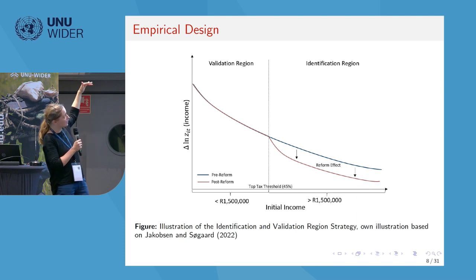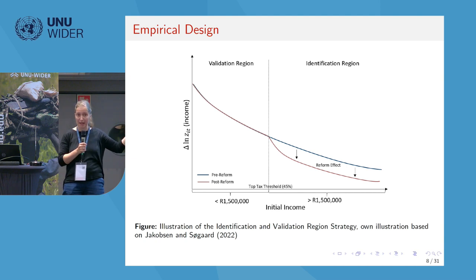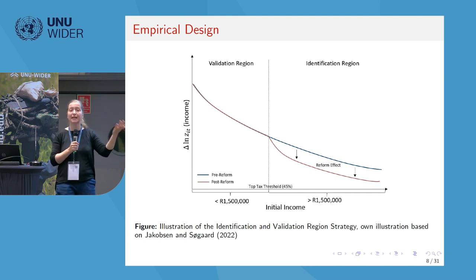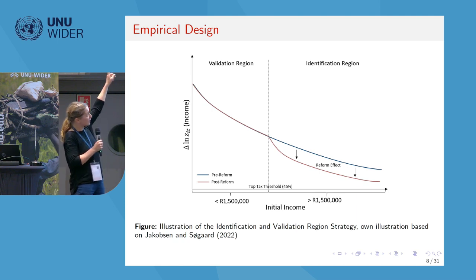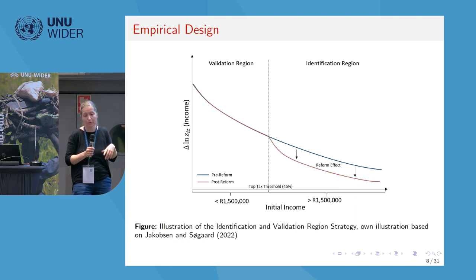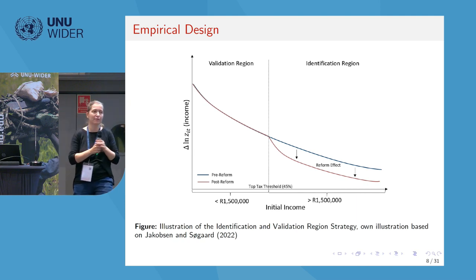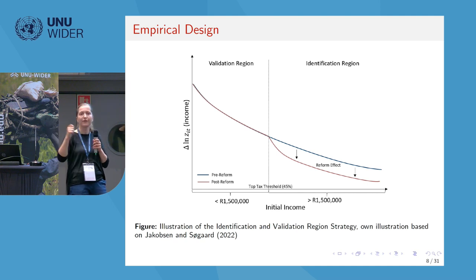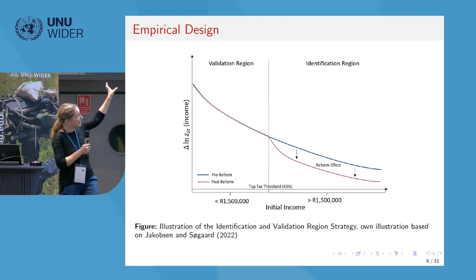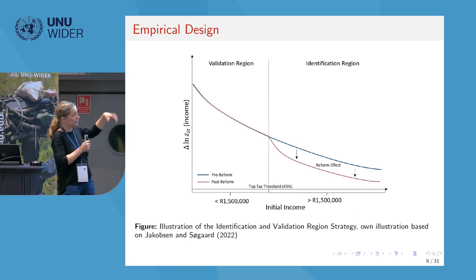What we observe in South Africa and other countries is income trends where on the horizontal axis you have the income level and on the vertical axis the income trend — how the income trend over time correlates with income level at a certain point. The correlation is actually negative. At the upper end of the income distribution, income trends are smaller than at the lower end. The reason is mean reversion: people may in one year have a very high income, and then revert back to the mean in the next year.